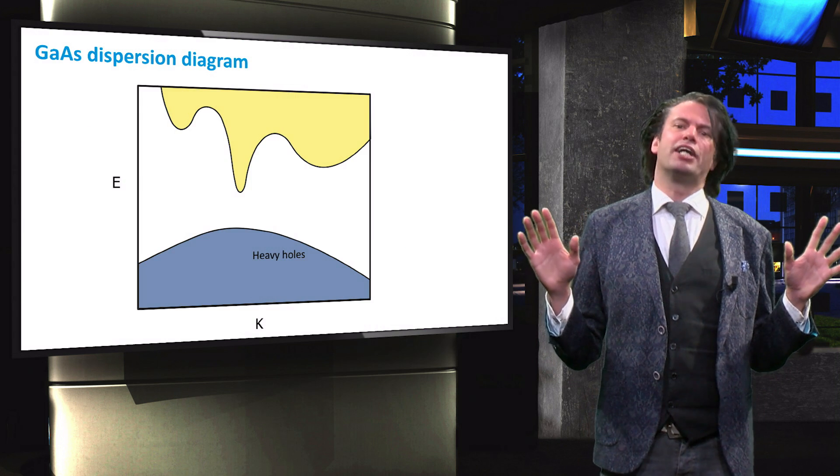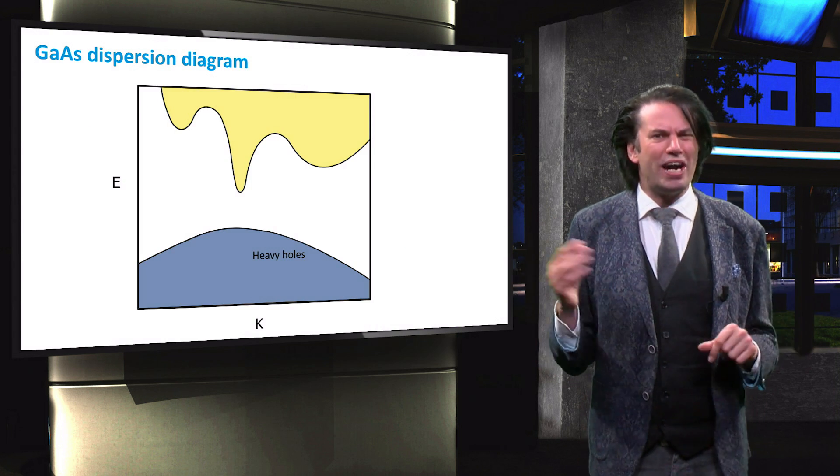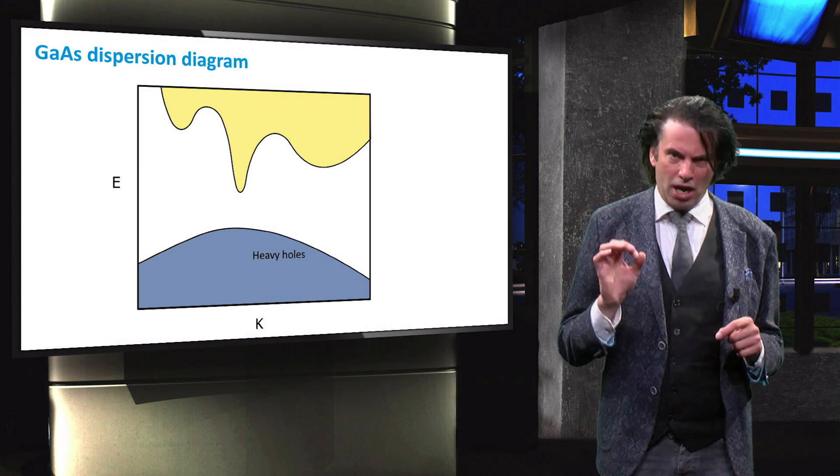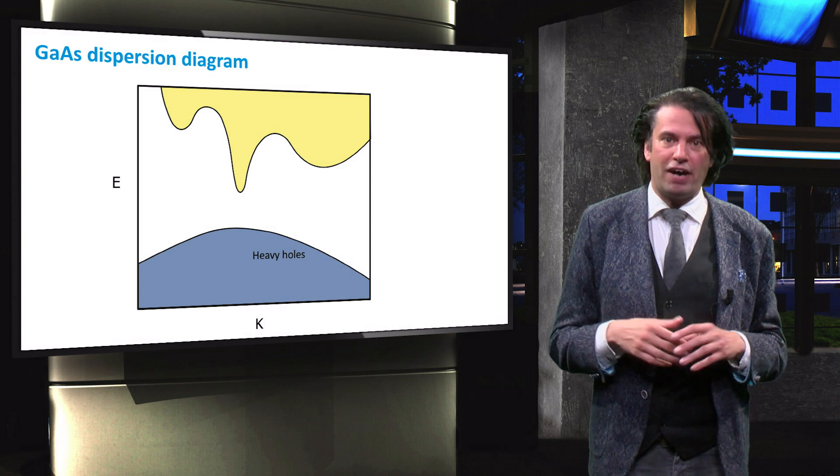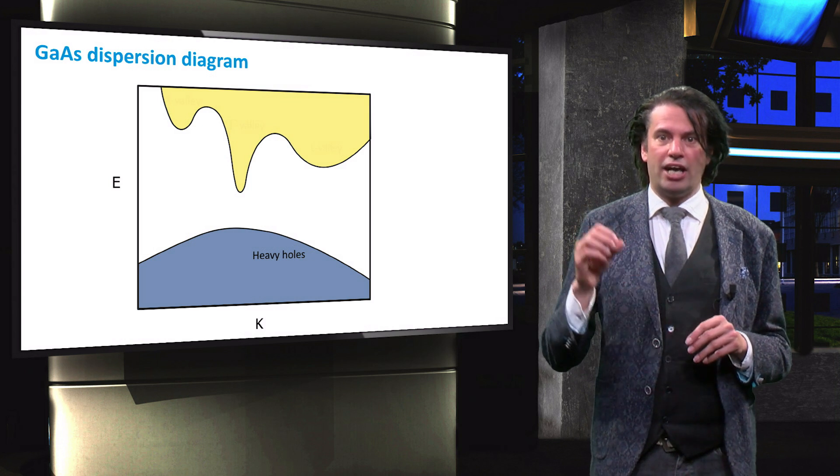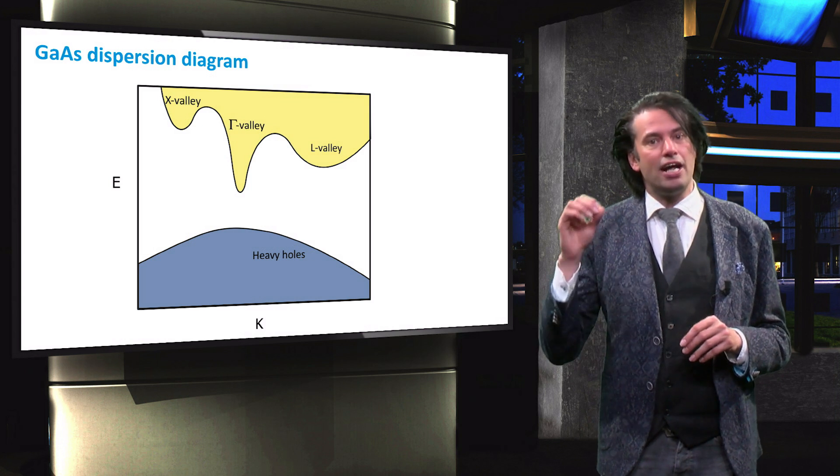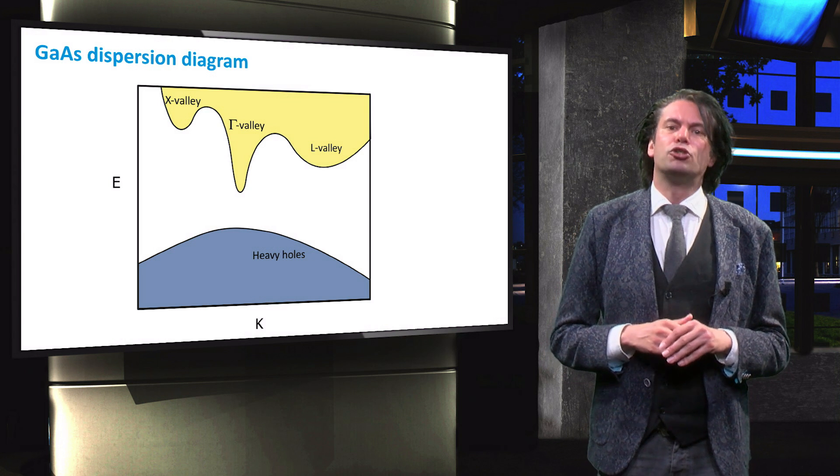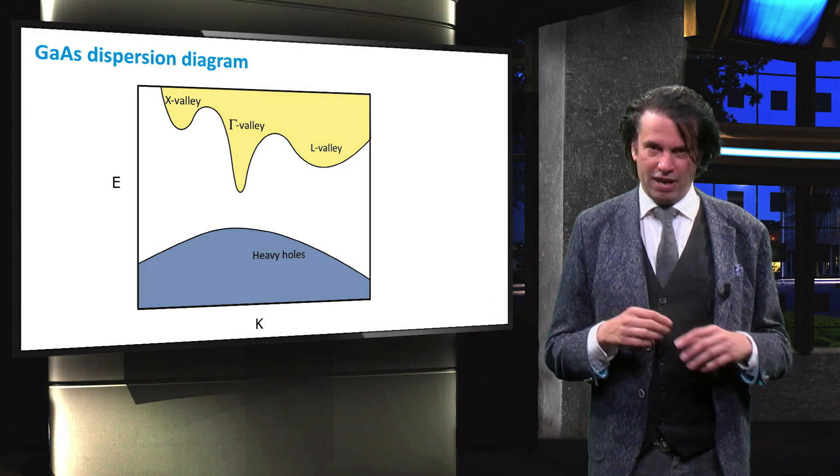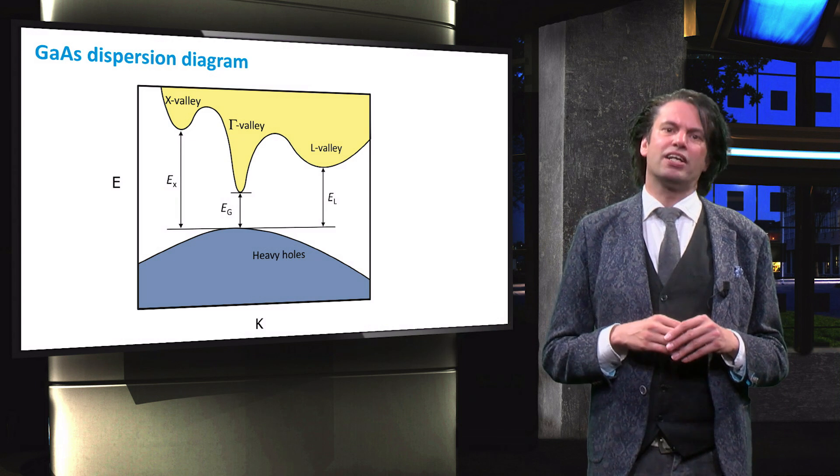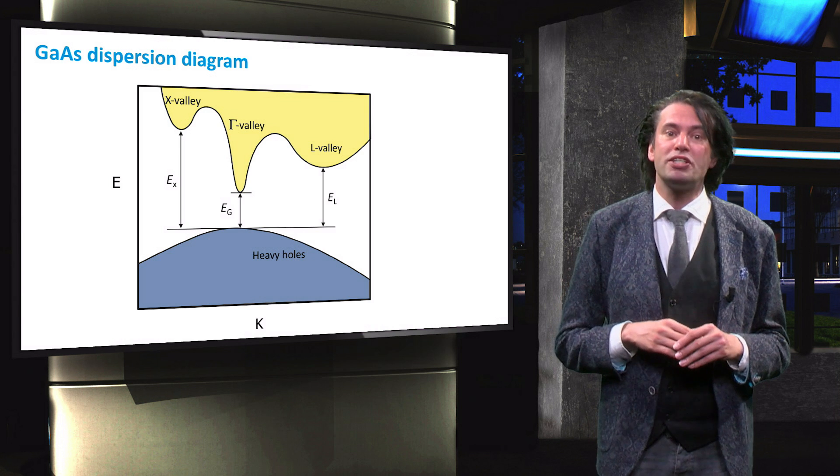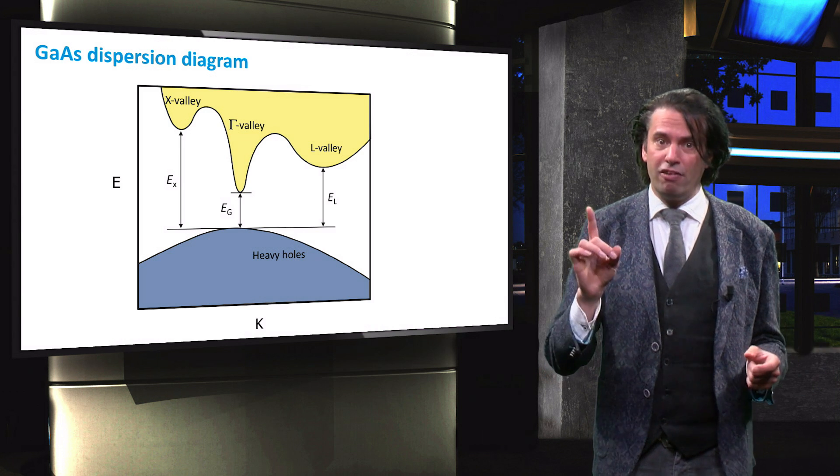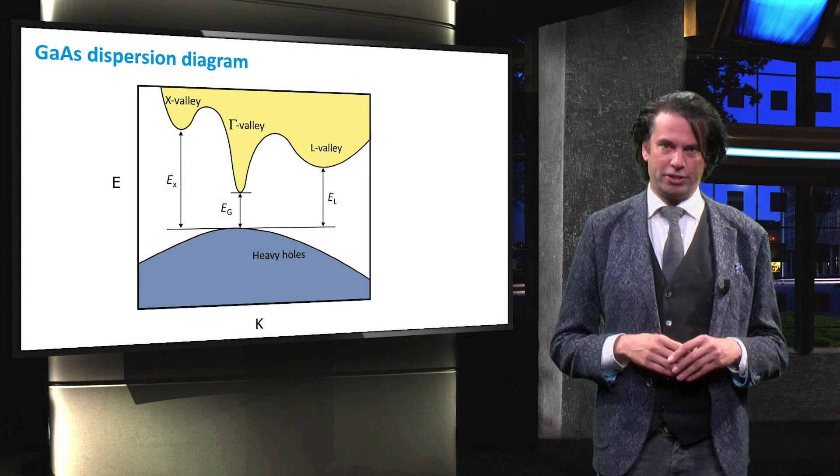The dispersion diagram of gallium arsenide is quite different from that of crystalline silicon. Gallium arsenide has three well-defined valleys at the X, gamma, and L positions of the crystalline lattice. The smallest band gap occurs at the gamma valley, where the valence band aligns vertically with the lowest energy level of the conduction band. Gallium arsenide is therefore a direct band gap material.